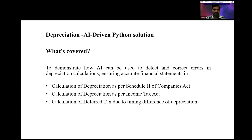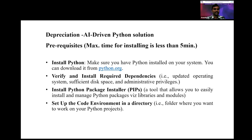Now, how we are going to address this issue is through AI, and how we can communicate with AI is important. Before anything, there must be a prerequisite — how a system should be set up to run a Python code. Usually there should be a Python application, which you can download from the website visible here. There are multiple pre-requirements needed to run a code, and it will take less than five minutes to install all the prerequisites.